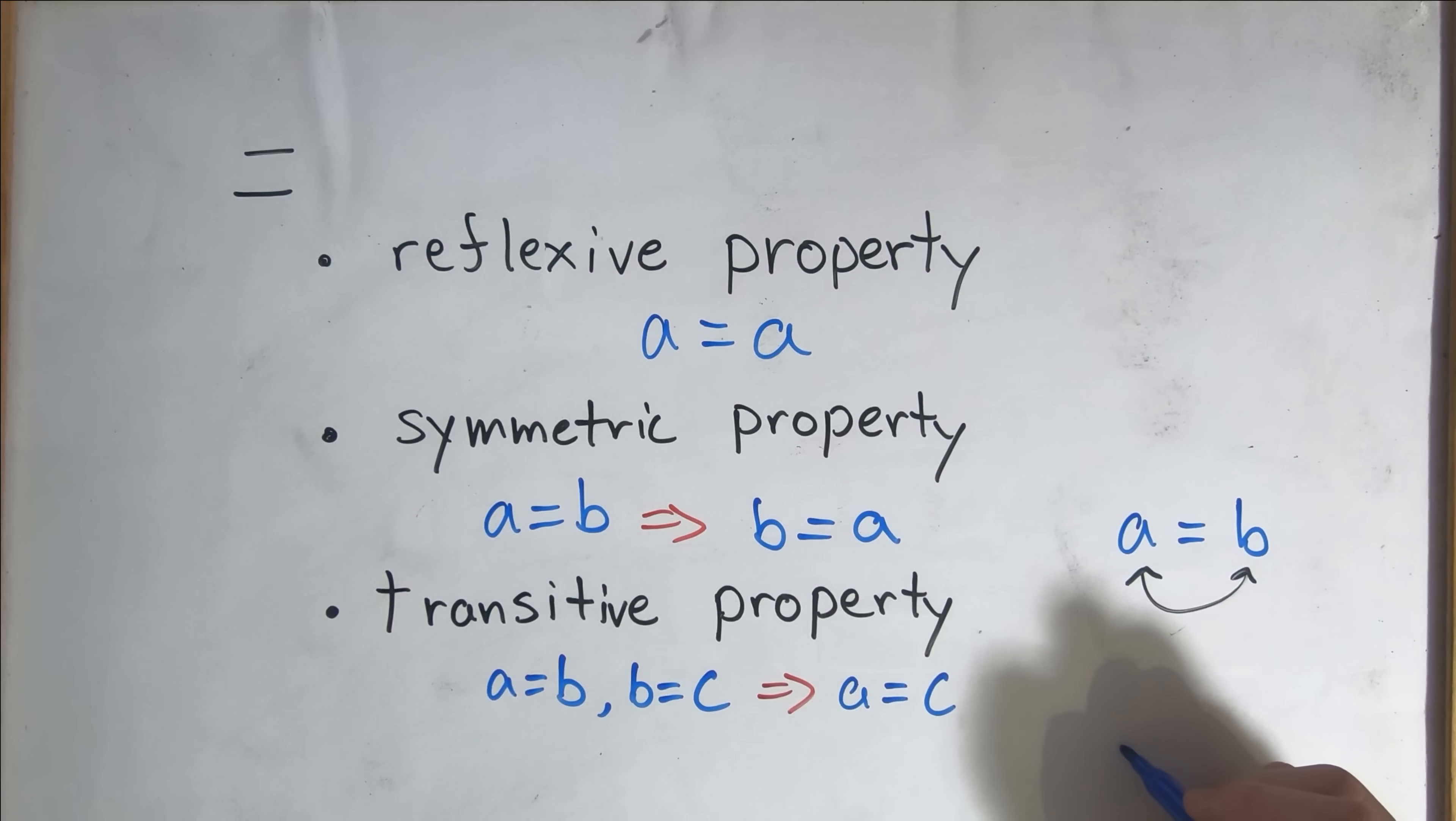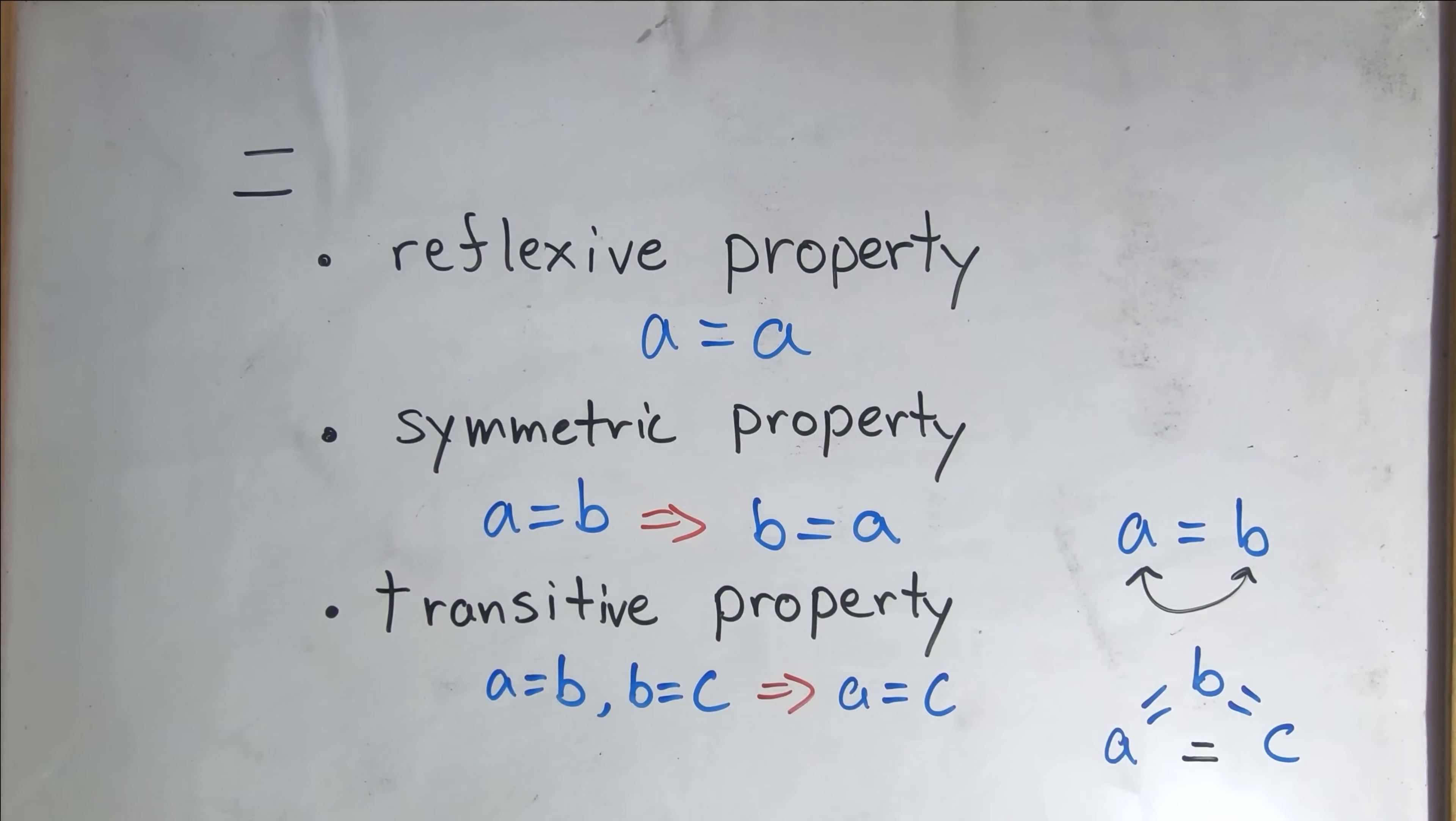You can imagine this as a triangle. If a equals b, and b equals c, it can be implied that a equals c. These points are pretty obvious for someone that knows basic arithmetic, but it is really important that we define these properties because we will need to use these later.